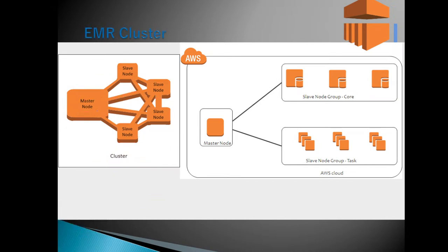The master node is connected to each node in the cluster. The key difference between the core node and the task node is that the core node also stores data, while the task node has no data storage. In the task node, data is brought on the fly only when a task is being performed.